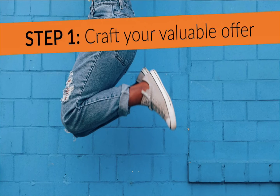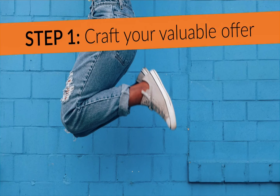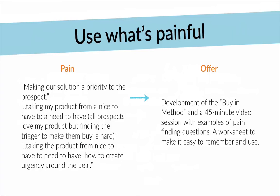The first step is crafting your valuable offer. We talked a lot about the transformation you want to take someone through, and we talked a little bit about finding what was painful to somebody. Each of those different pain points matches up to a part of your offer. For example, some pain points you might identify during research include making your solution a priority to the prospect, taking the product from a nice-to-have to a need-to-have, and creating urgency around a deal.